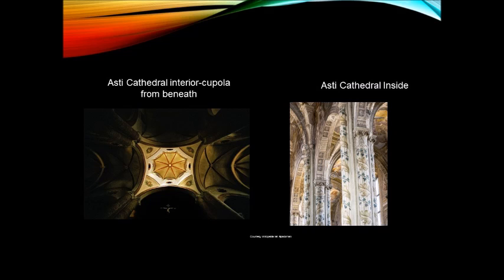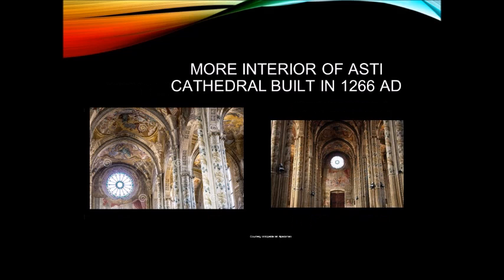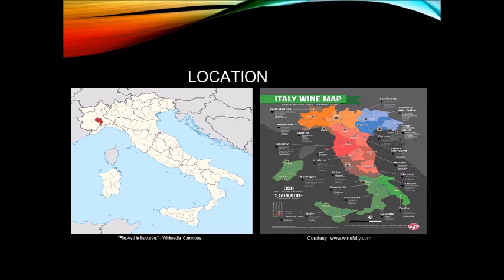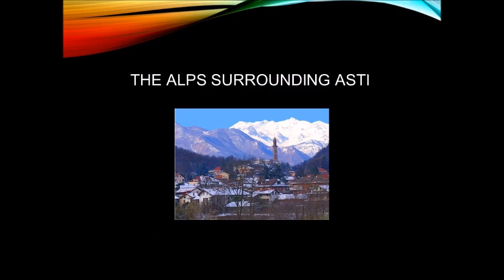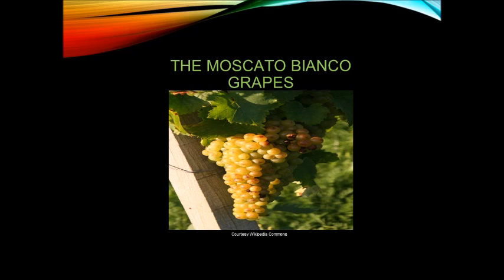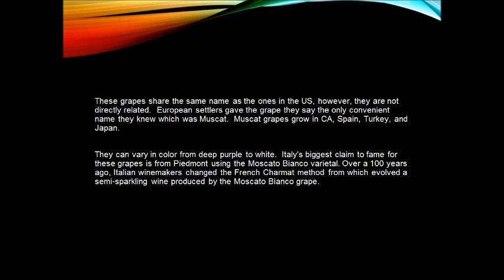Varietals of Loire Valley: Sauvignon Blanc, Chenin Blanc, Melon de Bourgogne, Muscadet, and Cab Franc. For Nantes: Muscadet, Sèvre et Maine. For Anjou-Saumur: Chenin Blanc. Also Cab Franc. For Touraine: Vouvray — Chenin Blanc of good quality — and Chinon with Cab Franc. For Central Vineyards: Sancerre with Sauvignon Blanc and Pinot Noir; Pouilly-Fumé with Sauvignon Blanc.